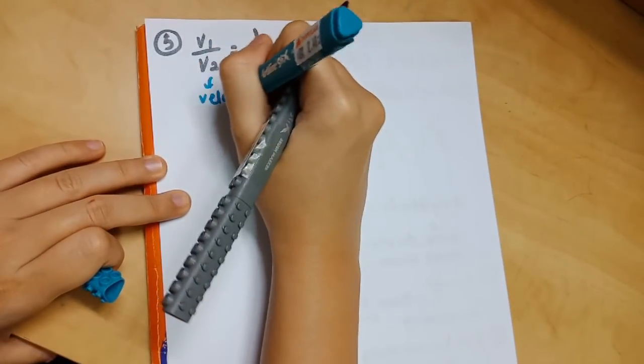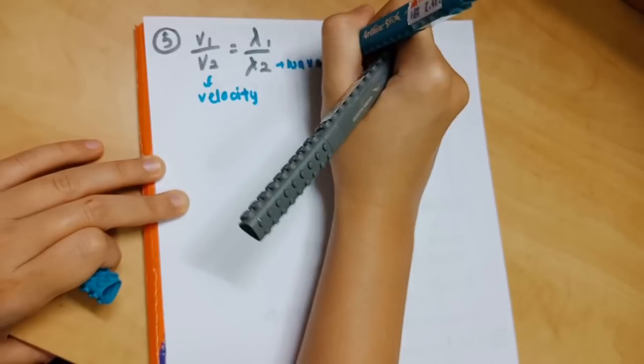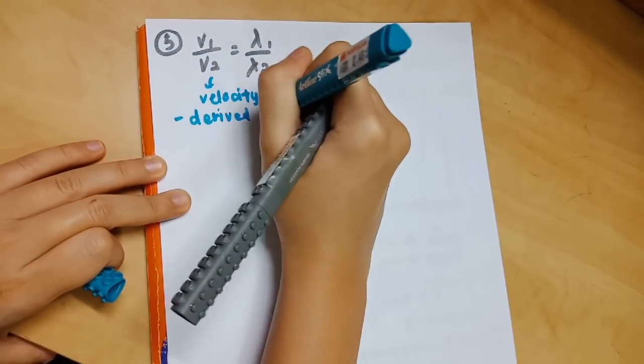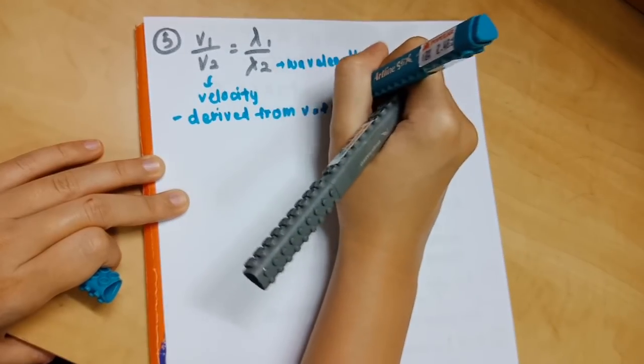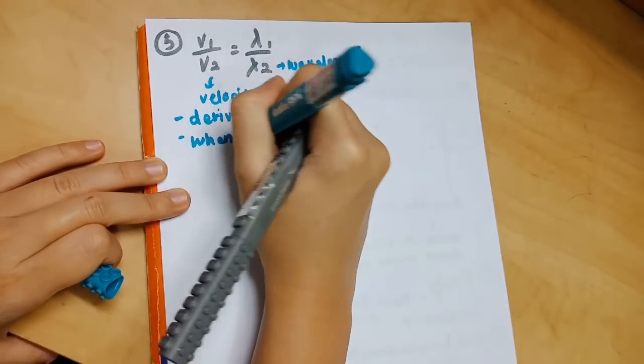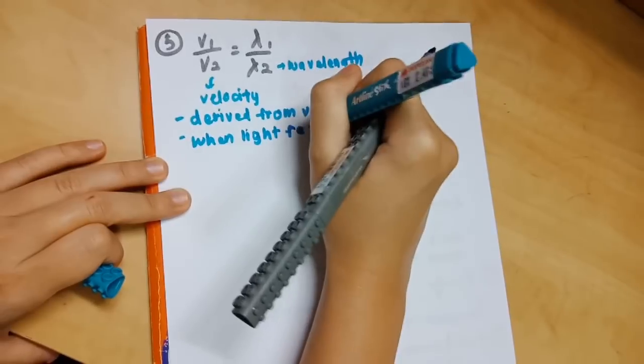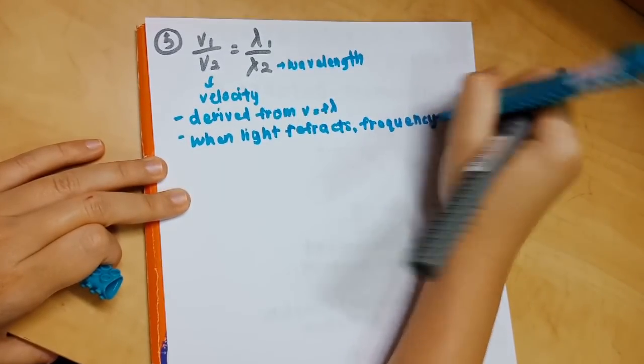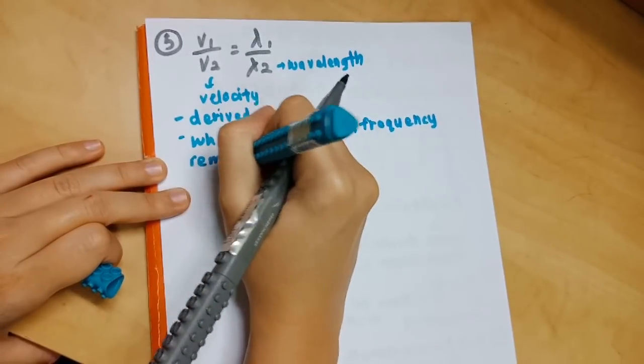Number 5: v1 over v2 equals lambda 1 over lambda 2. V is velocity and lambda is wavelength. This formula is actually derived from the third formula v equals f lambda. The theory is that when light refracts, frequency will remain the same.